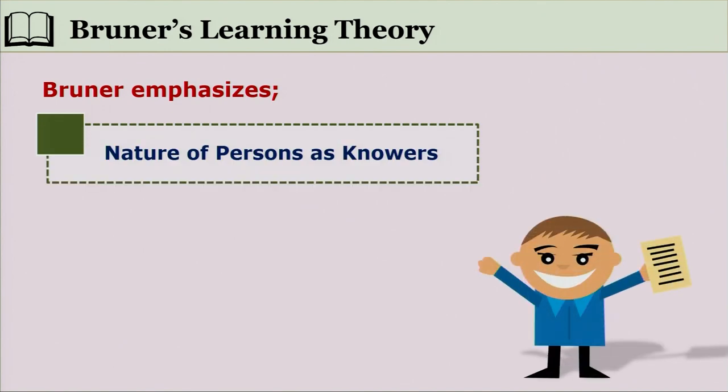Bruner emphasizes the nature of persons as knowers — how we feel when we are to acquire knowledge. Without curiosity, we don't make efforts to know about things. Our curiosity must be triggered first. Children naturally ask: 'What is this? How is this? Why does it happen?' We all have that inherent curiosity to know about the things around us, and Bruner emphasizes this quality of human beings.